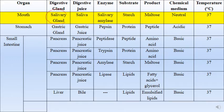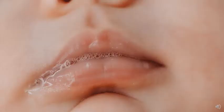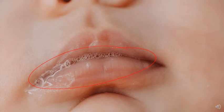In the mouth, we have a gland called the salivary gland. The salivary gland secretes a juice called saliva. This juice contains an enzyme called salivary amylase. Salivary amylase works on a specific substrate called starch and converts it to maltose. The medium is neutral with a pH of approximately 7, and the temperature is 37 degrees Celsius. That's why if we put a piece of bread in our mouth, it becomes sweet in taste due to the conversion to maltose.